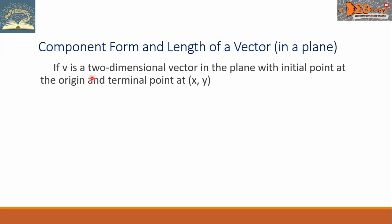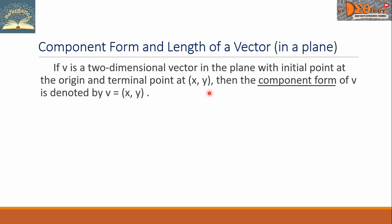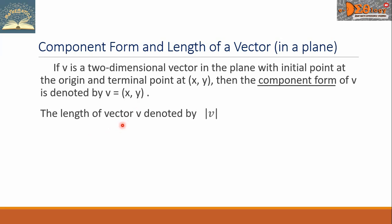If V is a two-dimensional vector in the plane with initial point at the origin and terminal point at (X, Y), then the component form of V is denoted by V equals the ordered pair (X, Y). The length of vector V, denoted by this symbol and read as 'length of vector V,' equals the square root of the quantity X squared plus Y squared.